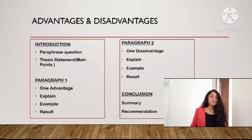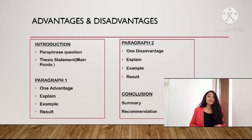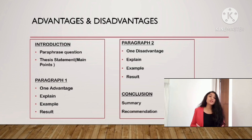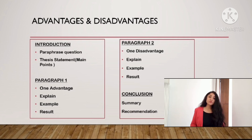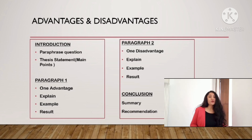In the introduction, outline the advantages and disadvantages. In body paragraph 1, write the first advantage, then explain that advantage, then give an example related to it, and end with an explanation of the result. You should include examples in your body paragraph as it will get you good marks — you can assume and create examples if needed. In body paragraph 2, start with one disadvantage, explain it, give an example, and explain the effect and result.